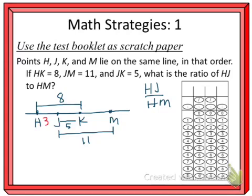And then from J to M is supposed to be 11, and if I already have J to K is 5, the part that's left over is 6, if I just subtract those two.